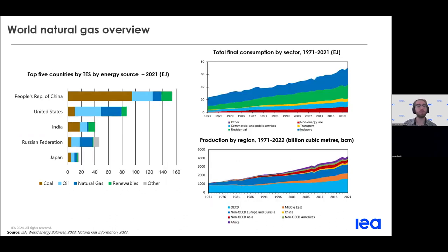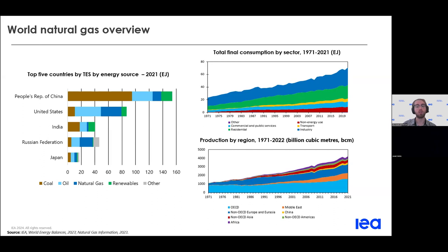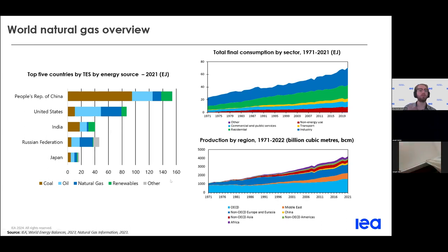Here are some interesting graphs that show the different production and consumption of natural gas. Gas comprises roughly a quarter of total energy supply globally, but this can change greatly on a country-by-country basis. Large emerging economies such as China and India have a relatively small amount of gas in their energy supply — around 6% or 7% — whereas large producing countries like the United States and Russia have much more, with the US at 32% and Russia at 54% natural gas. The graphs also show the general consumption and production of natural gas across many different sectors and regions globally.